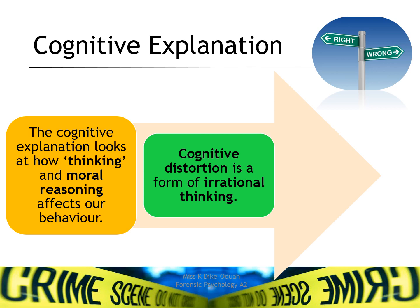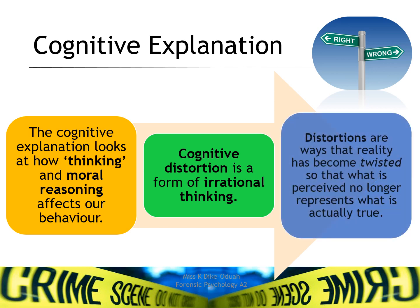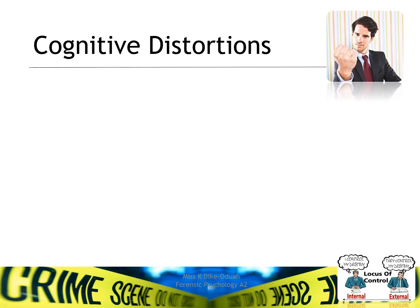Cognitive distortion is a form of irrational thinking, and distortions themselves are ways that reality has become twisted, so what is perceived no longer represents what is actually true. There are four cognitive distortions you can refer to as part of your AO1 description for the Cognitive Explanations of Offending Behaviour. On this slide we'll go through what each of those four cognitive distortions mean, and on the following slide we'll apply them to explain criminal behaviour.